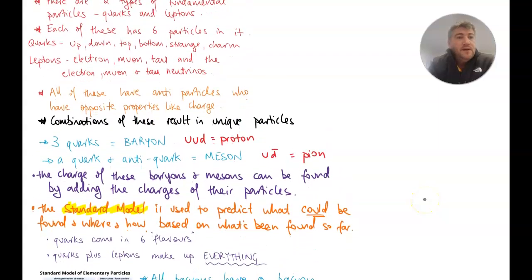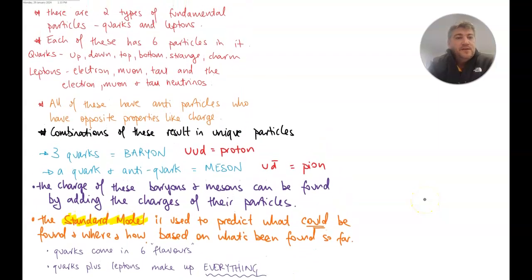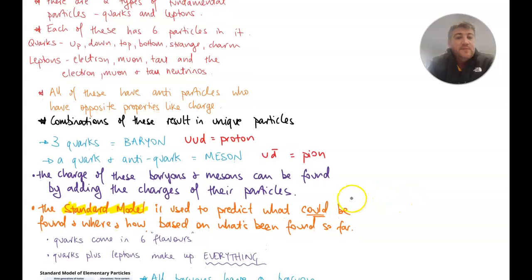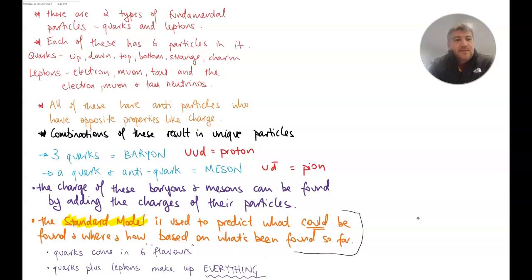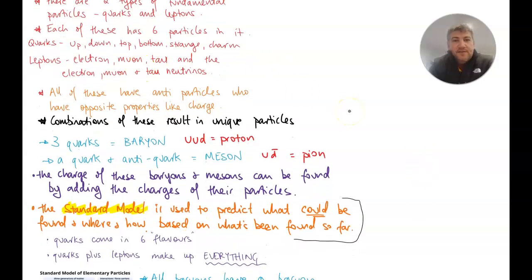All right, with the standard model, what we need to realize or hopefully understand is that the standard model is a system that's been designed to predict and model what we've discovered so far using particle accelerators. It's not something that's meant to be super complex, even though it does deal with things called quarks and leptons and mesons and baryons. What it's doing is giving people at CERN, where the Large Hadron Collider is, an opportunity to look for a needle in a haystack, but at least they know roughly where in the haystack they're looking.